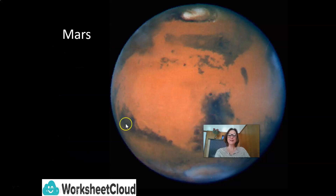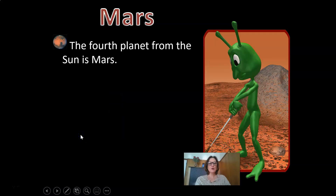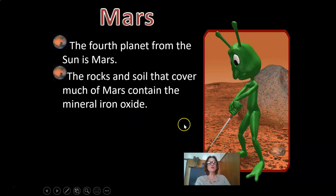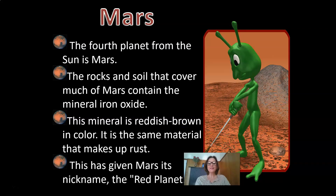Mars is the fourth planet from the Sun. The rocks and soil that cover much of Mars contain the mineral iron oxide, which is reddish-brown in color — the same material that makes up rust. This has given Mars its nickname: the Red Planet.